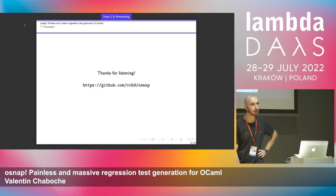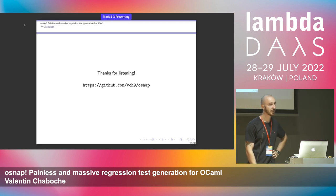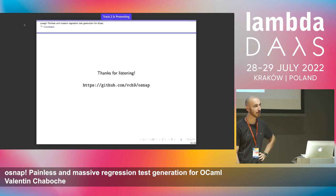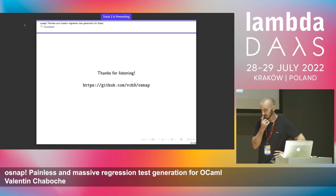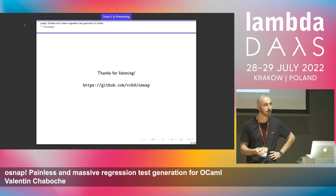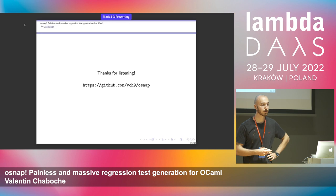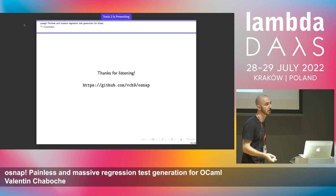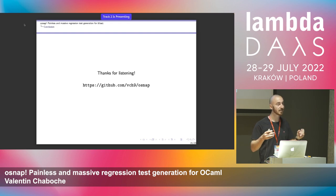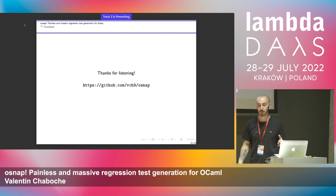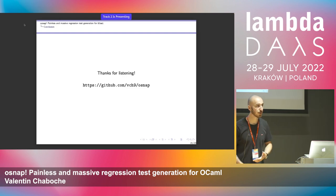Question: Do you actually store the inputs in the file or just store the hash for the generator? Answer: We store the inputs. At first we thought about keeping the seed and number of inputs, but you can change your generator. So we really wanted to keep the inputs and have a clear relation between inputs and outputs that you can see with your own eyes — though for bigger functions the values can be really large.